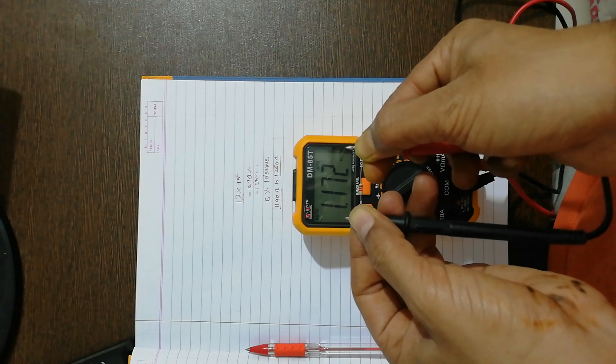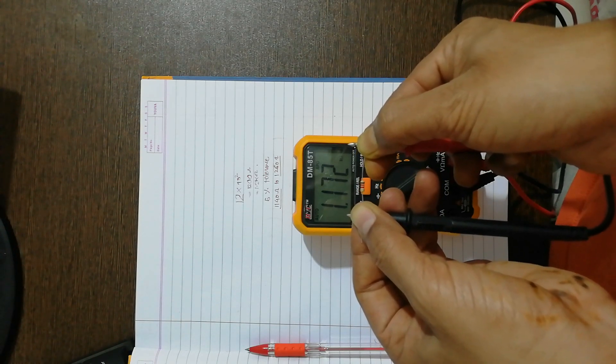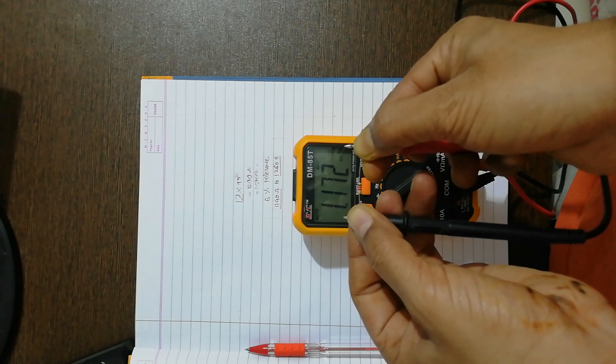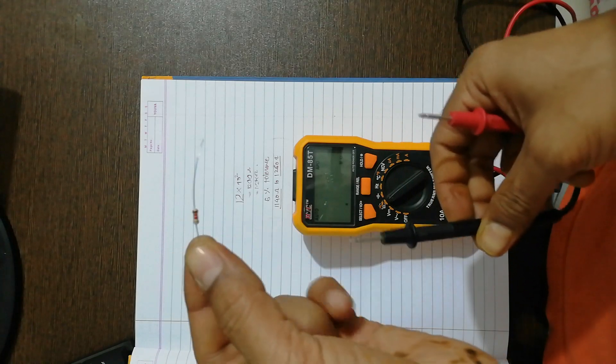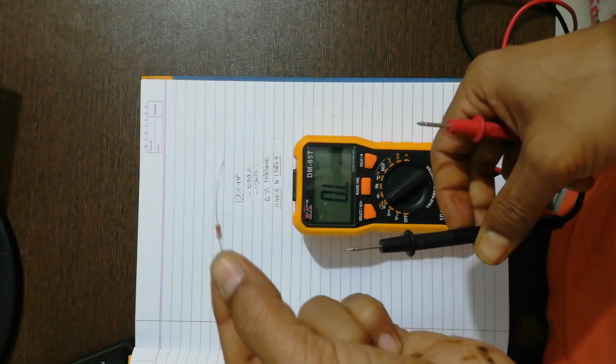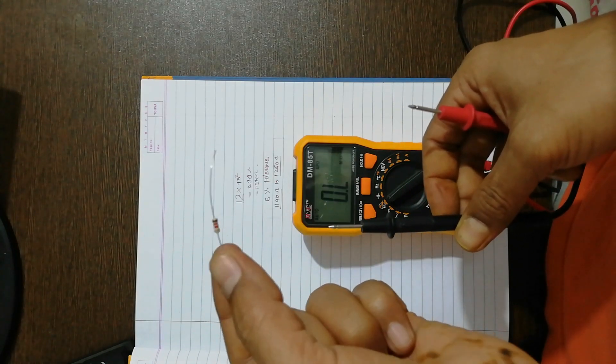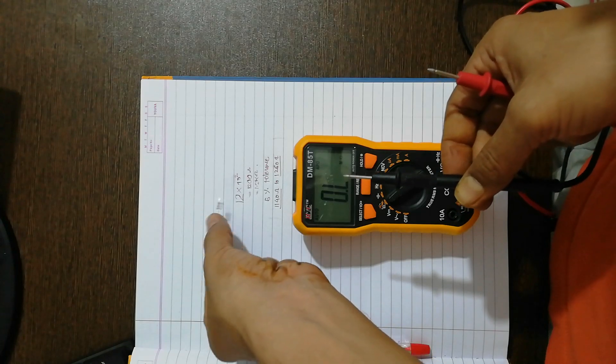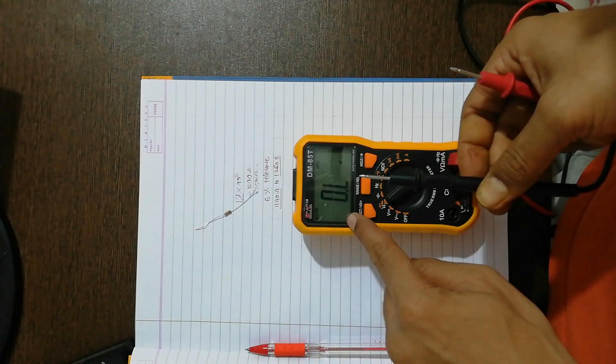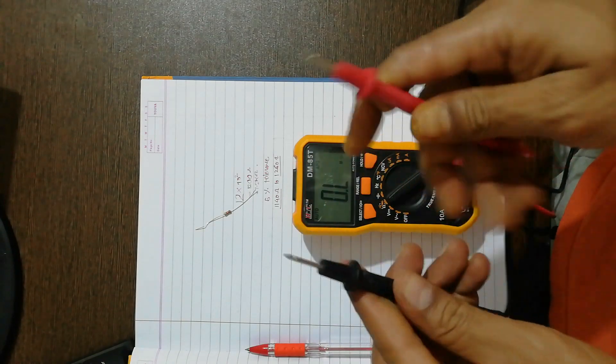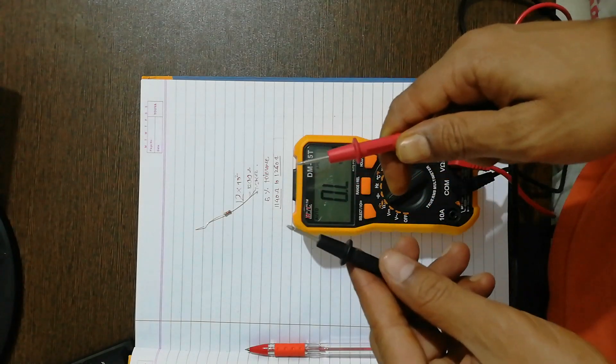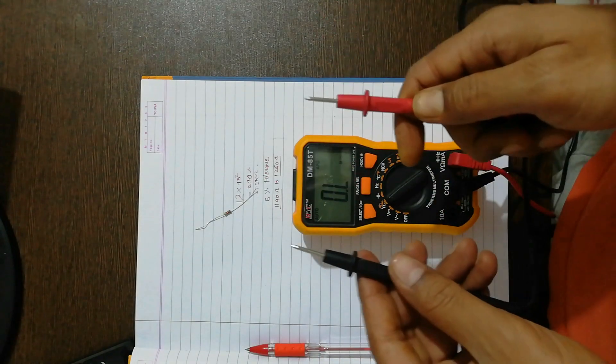So that's the way we can calculate the value of the resistor by inspection by using the color code, and to verify, we can perform the experiment using the digital multimeter and have the setting as shown. Take the resistor in your hand, connect the probes to each end of this terminal, and verify its value.